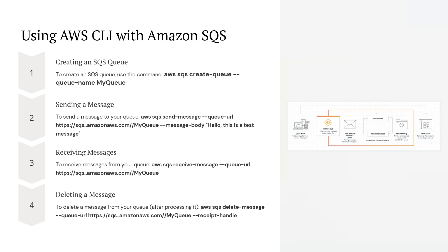Using AWS CLI with Amazon SQS: to create an SQS queue, use 'aws sqs create-queue' followed by the queue name. To send a message to your queue, use 'aws sqs send-message' followed by the queue URL and the message body. To receive messages from your queue, use 'aws sqs receive-message' followed by the queue URL. To delete a message from your queue, use 'aws sqs delete-message' followed by the queue URL and the receipt handle.